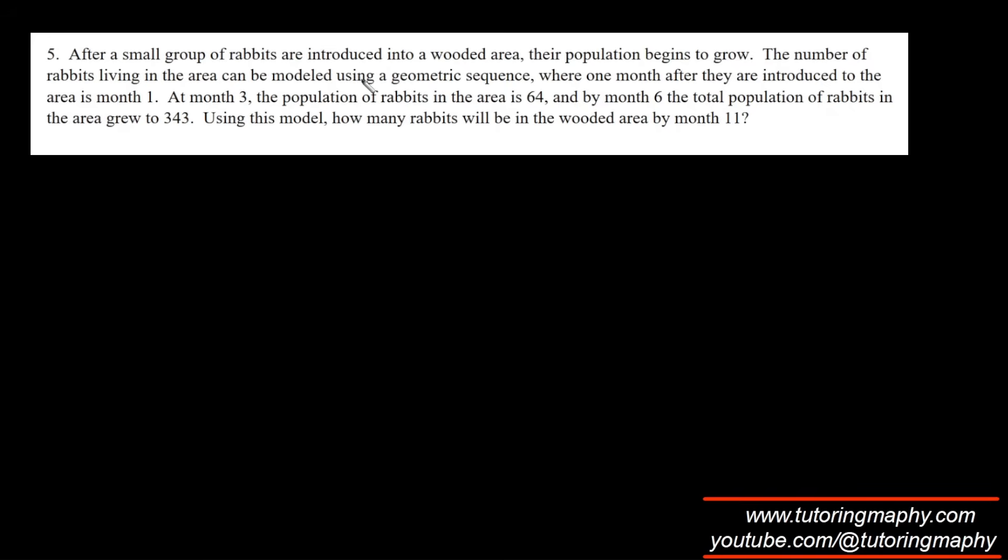A small group of rabbits are introduced into a wooded area. The population begins to grow and it follows a geometric sequence. One month after they are introduced to the area is month 1. At month 3, I will write g3, and g3 is given as 64. At 6 months, g6 is 343. They are interested in g11.